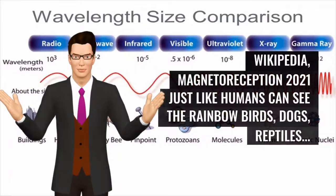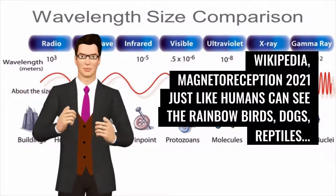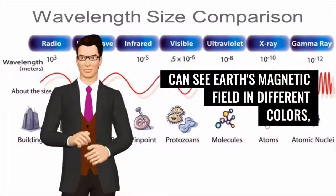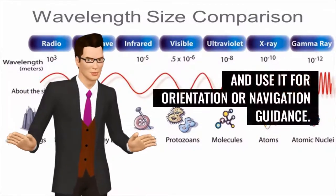Just like humans can see the rainbow, birds, dogs, reptiles can see Earth's magnetic field in different colors and use it for orientation or navigation guidance.